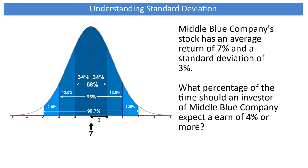Therefore, the markings along the axis will be 4 at one standard deviation below, 1 at two standard deviations below, 10 at one standard deviation above, 13 at two above, and 16 at three above. The question asks for 4% or more.